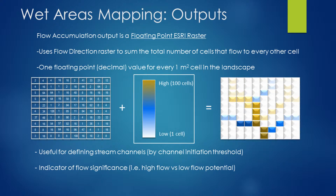The next output is the flow accumulation raster, which is a floating point raster informed by the flow direction. It's essentially a running tally of the upstream contributing area to every single cell across the landscape. We have flow accumulation values — in this case from 1 to 100, representing how many upland cells would flow into any particular cell — and this is what a flow accumulation raster looks like.